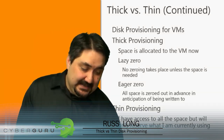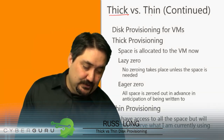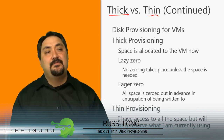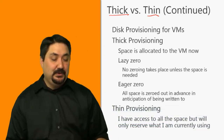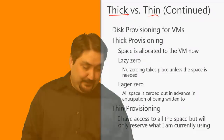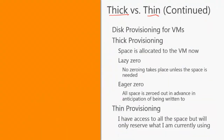Let's continue on — thick versus thin. Thick provisioning and thin provisioning are two totally different concepts. A thick provisioned disk means I'm going to provision, let's say 50 gigabytes of disk space. When I provision 50 gigabytes of disk space to a particular virtual machine, that virtual machine is going to reserve all 50 gigabytes of that storage space.